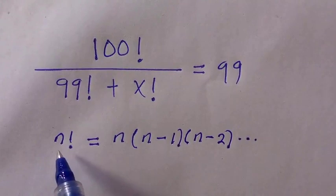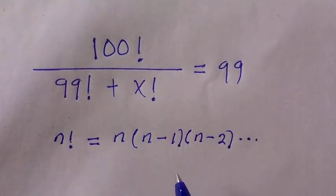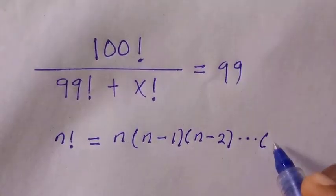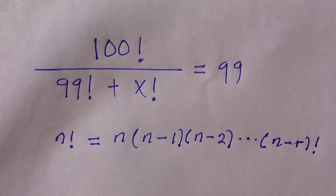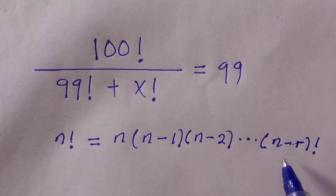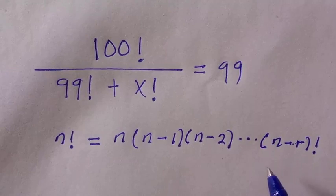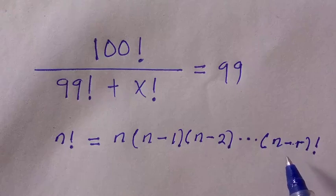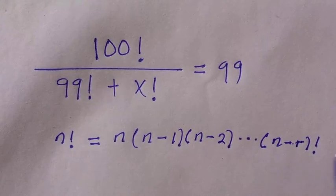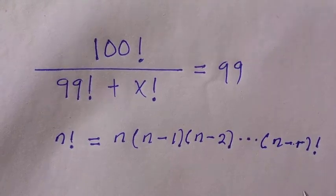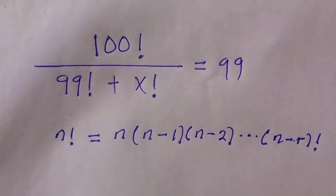This number, which is n factorial, determines where we are going to stop. Suppose I stop at n minus r factorial, where r is a member of integers which includes 0 and excludes negatives. So to solve this problem...